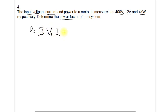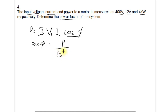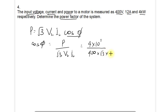From the question, the line voltage is 400 volts, the line current is 12 amperes, and the power is 4 kilowatts. Making cosφ the subject, cosφ = P / (√3 × VL × IL) = (4 × 10³) / (400 × √3 × 12). Simplifying on the calculator gives a power factor of 0.481.